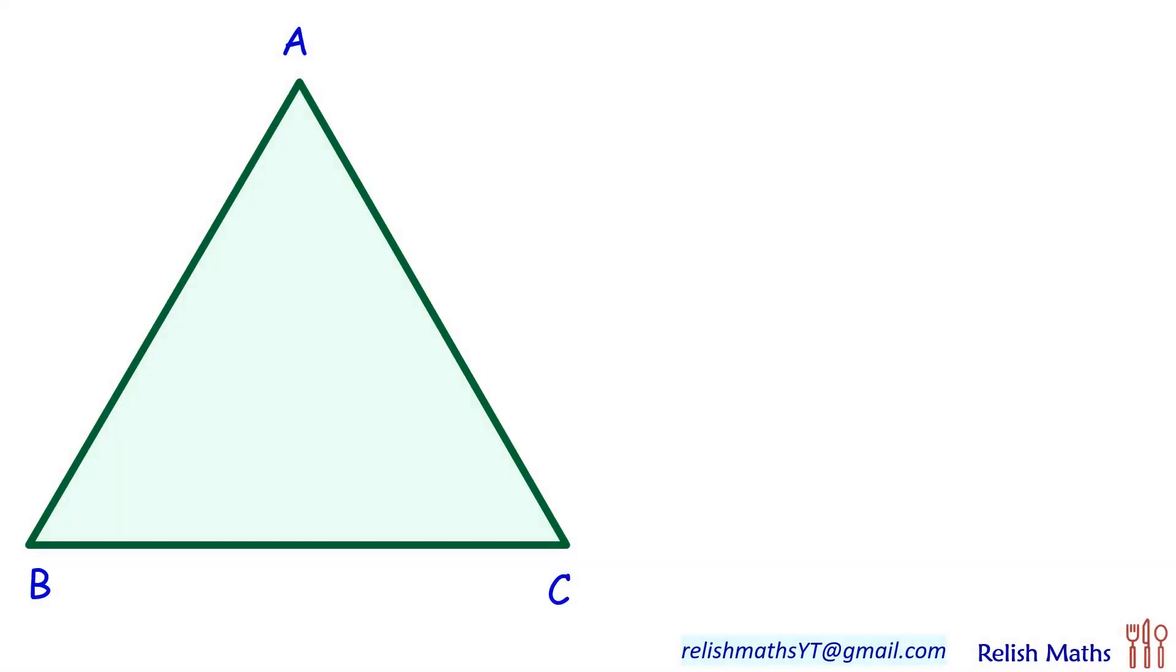In today's question, given is ABC is an equilateral triangle. Inside it we have randomly selected a point O. From this point we are dropping perpendiculars on all three sides. The length of these perpendiculars is given as 2 centimeters, 3 centimeters, and 4 centimeters. Using this data we have to find the area of the triangle.